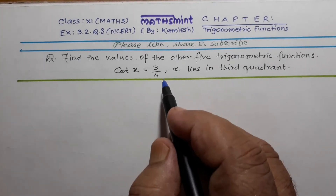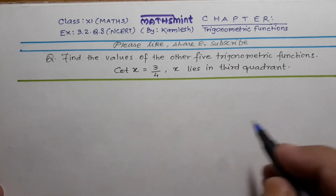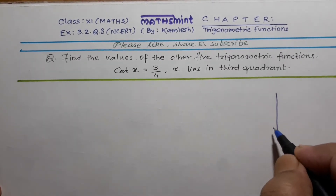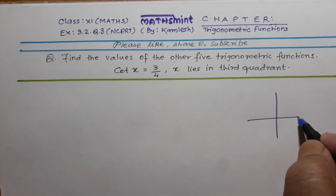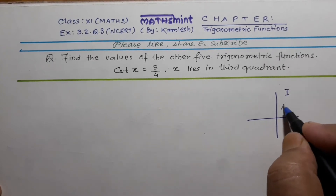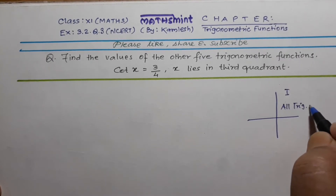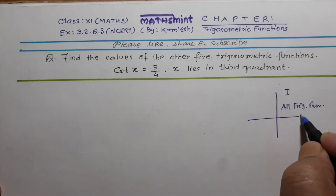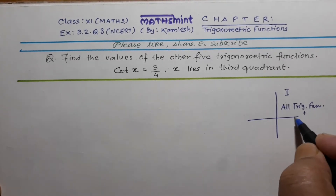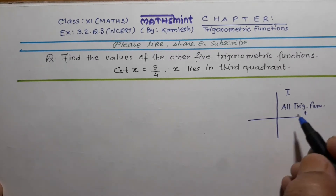Before solving this question, some basic things you should know. In the first quadrant, all trigonometric functions are positive. All trigonometric means sine, cos, tan, cot, sec, etc. — all will be positive.